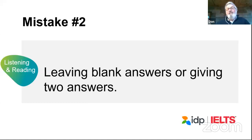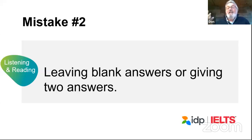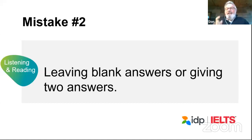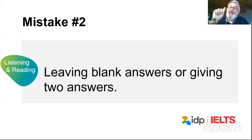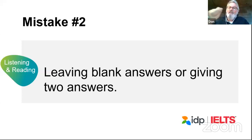If it's a true, false, not given question, write true, true, true, true — maybe you'll get a couple correct. If you have to guess a word or a number, guess it, because there are no penalties for getting the wrong answer. But the penalty for not answering is clear — you will not get a score. Also, don't write down both A and B if you're unsure. If the answer is A but you wrote A and B, both are marked as wrong. If you are asked for only one answer, only give one answer.